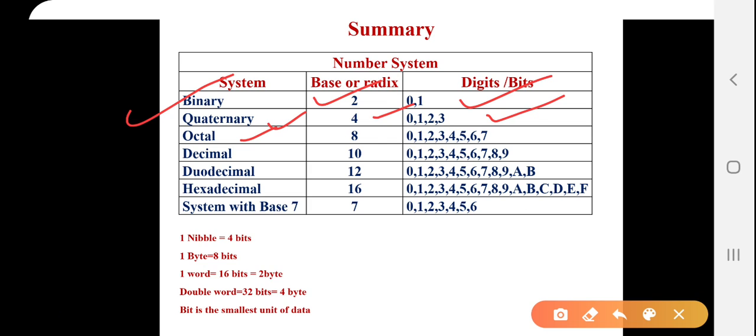For octal number system, the base is 8 and the numbers in between 0 to 7. For decimal number system, the base is 10, numbers are in between 0 to 9. For duodecimal number system, base is 12 and the numbers are 0 to 9 and AB. For hexadecimal number system, the base is 16, so the digits will be 0 to 9 and A to F. And let us say, the system with the base 7, so in that case, the base will be 7 and the number will be 0 to 6.